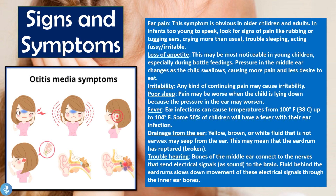Irritability — any kind of continuing pain will cause irritability in these children. Poor sleep — the pain may be worse when the child is lying down because the pressure in the ear may worsen, leading to difficulty sleeping. Fever — ear infections can cause temperatures from 100°F (around 38°C) up to 104°F, and some 50% of children will have a fever with their ear infection. Drainage from the ear — sometimes a yellow, brown, or white fluid that is not earwax may seep from the ear, which may mean the eardrum has ruptured. Troubled hearing — the bones of the middle ear connect to nerves that send electrical signals as sound to the brain, and fluid behind the eardrum slows down the movement of these signals, so patients may also suffer difficulty in hearing.